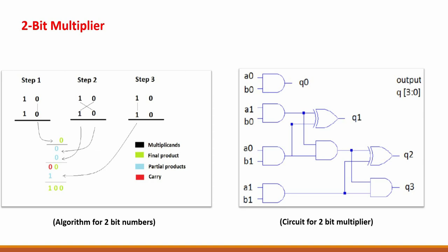Starting with a 2-bit multiplier and eventually we'll reach the 8-bit. There are three steps. In step 1, we vertically multiply the LSBs. In step 2, we crosswise multiply the available bits. For step 3, again vertical multiplication of the MSBs. For the final product, the result of step 1 goes as it is. The crosswise multiplications happen twice and we add those results. The carry generated is added to step 3's product, and we get the final answer.